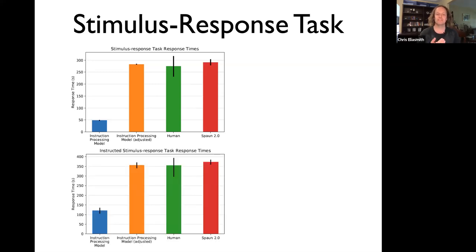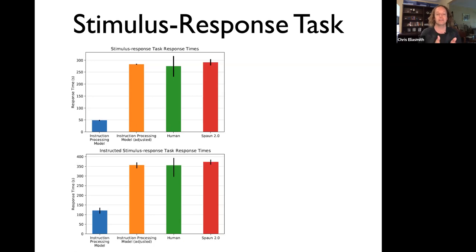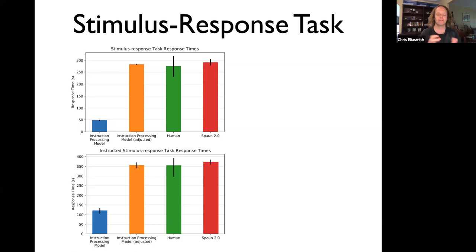If we pick the constant right, we get a reasonable match to human data. The same applies to the instructed stimulus response task — everything matches quite well, and the really big change is in the instruction processing part of the model. This lets us test a fairly specific hypothesis about what is causing the reaction time difference observed in human behavior, showing that the other parts of SPAWN are consistent enough to account for the time it takes people to perform that same task.